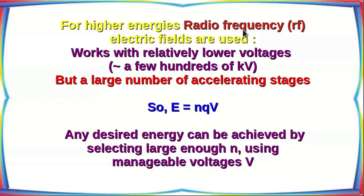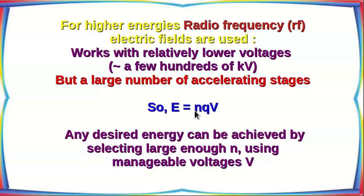For higher energies, radio frequency electric fields — RF fields — are used. These can work with relatively lower voltages, typically a few hundreds of kilovolts. The trick is to use a larger number of individual accelerating stages, each giving an energy boost of the order of hundreds of kV. The final energy will be N times Q times V, where N is the number of stages. Therefore, any desired energy can be achieved in principle by selecting a large enough number of stages while using manageable voltages.